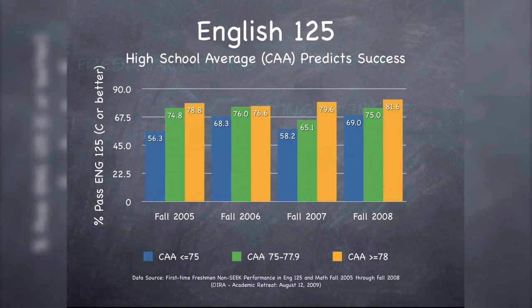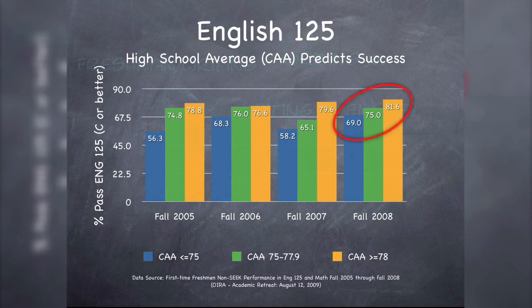I want to turn now and look at our freshman writing course, English 125, sometimes known as first-year composition. What we're looking at here is a chart that shows entering students' high school academic averages and pass rates on freshman writing or English 125. The key things to note are that when students come into the college with a high school academic average below a 75, their pass rate is much lower than if they come in at a 75 or higher — and particularly in the last couple of years, when they come in above a 78. For example, in the fall 2008 entering class, students who came in below a 75 had a pass rate below 70%, while those with a high school average above 78 approached an 82% pass rate.